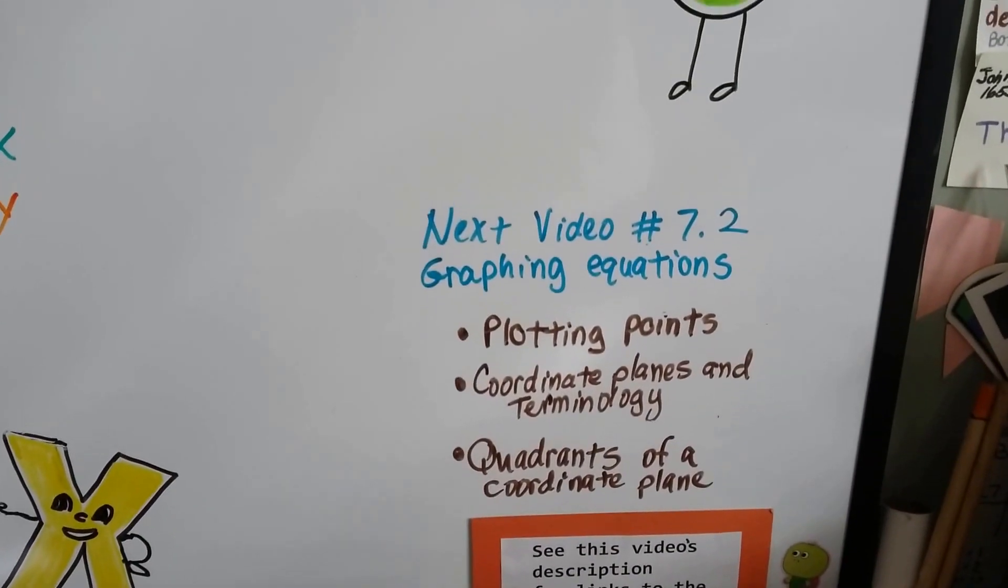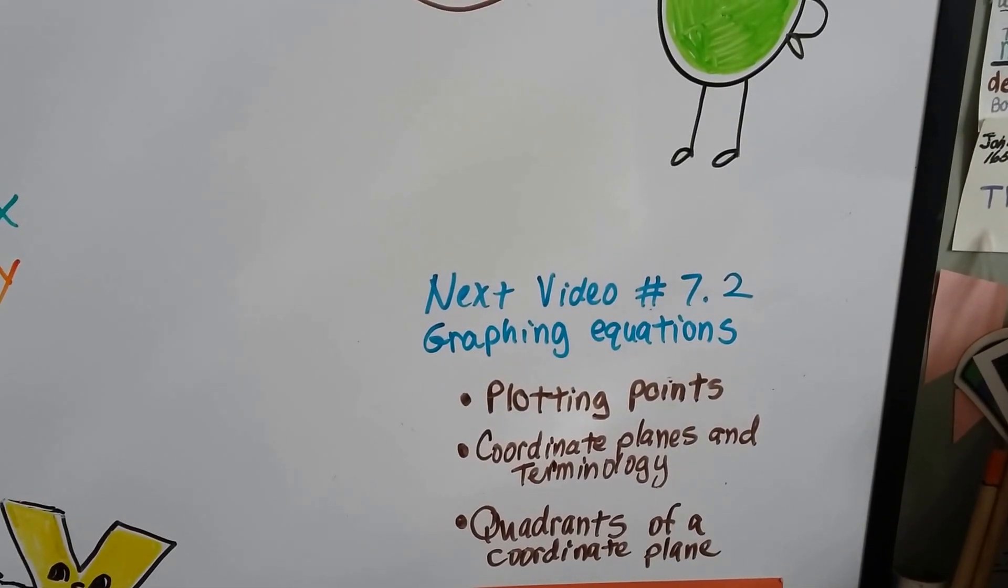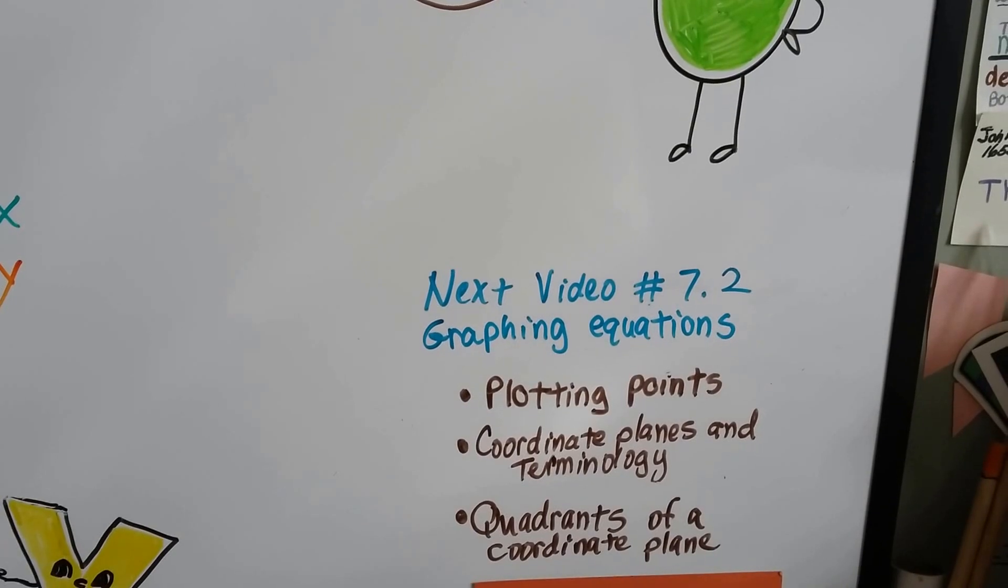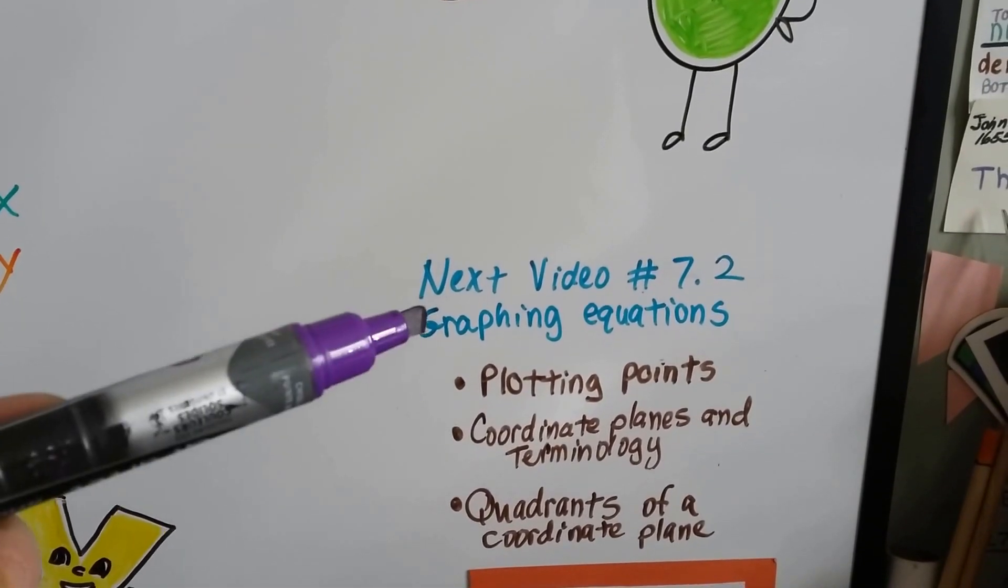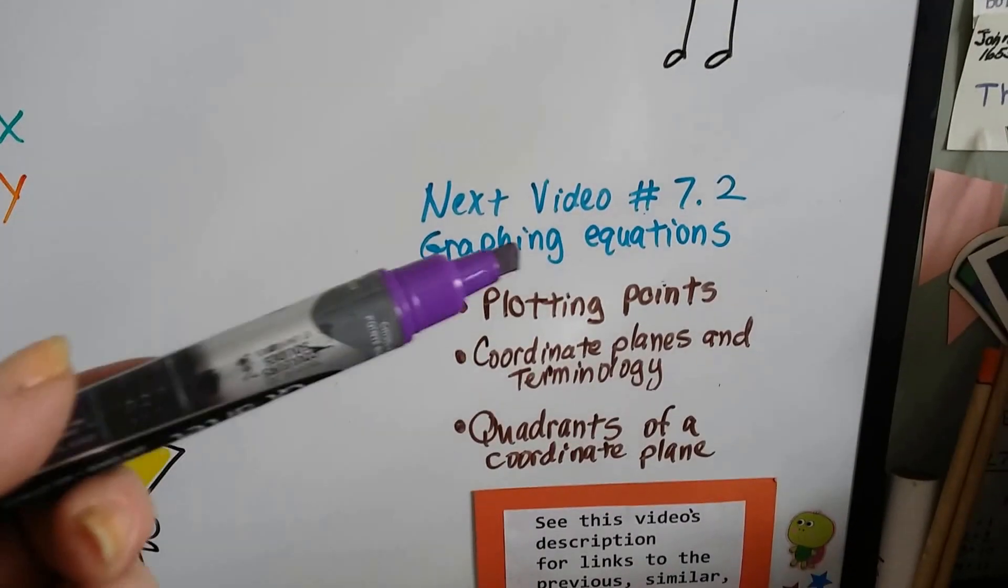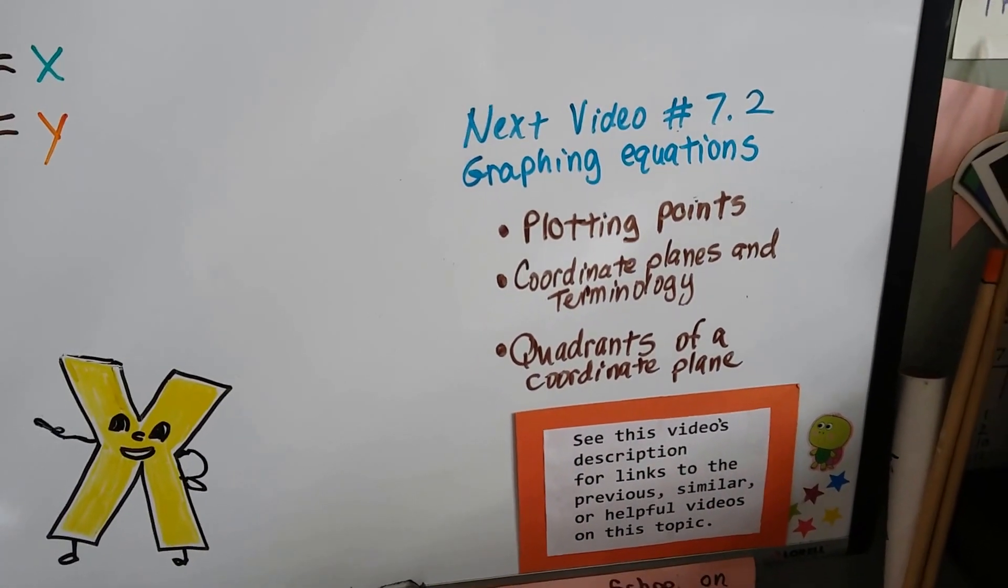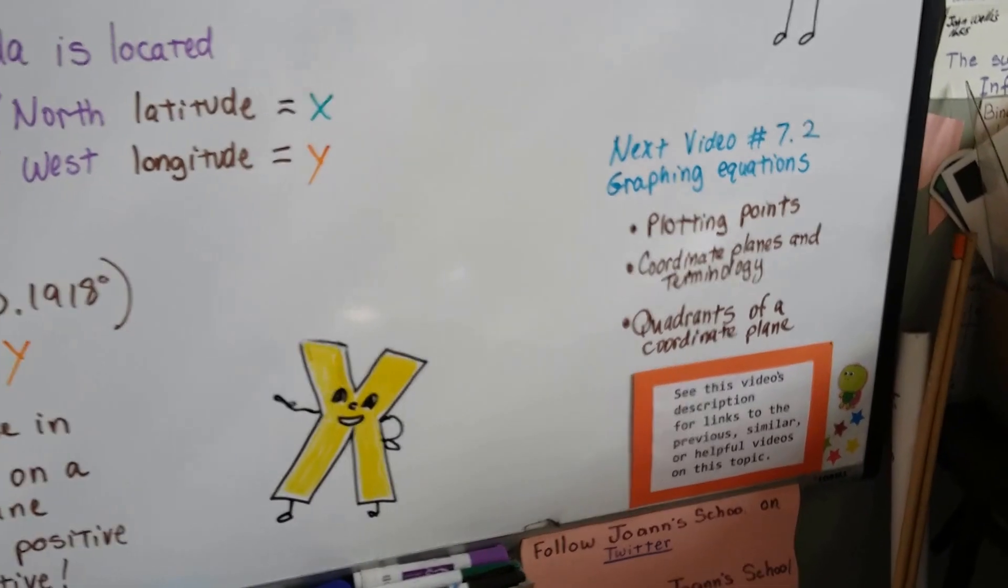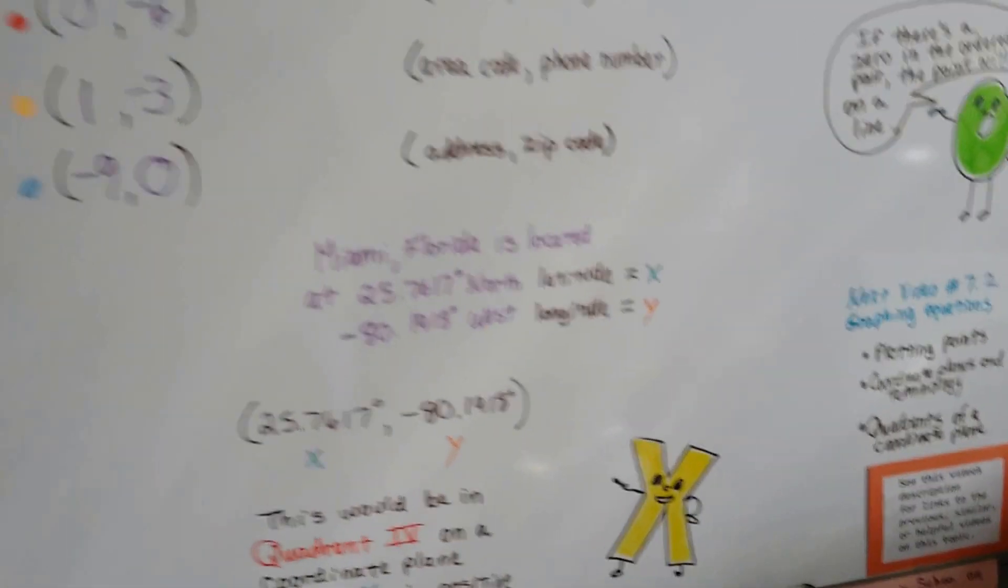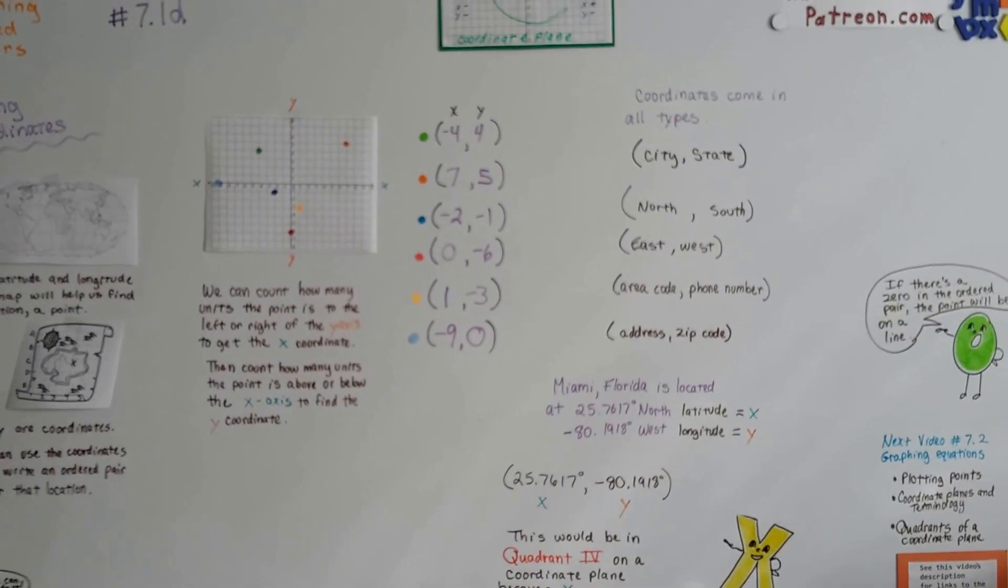In our next video, 7.2 in the next unit, I should say, we're going to be talking about graphing equations and solutions for equations. So if you want to go back and watch any of the previous videos that you've missed or you want to review, there's going to be links in this description. Okay? Plotting points, the terminology for coordinate planes and the break-up of the quadrants and all that, all right?